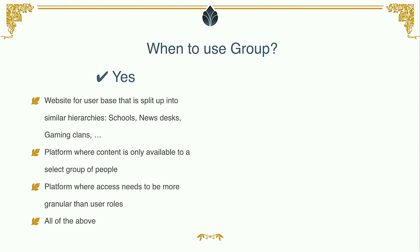You can also use group to create a platform where content is only available to a handful of people — think press area. When you want press releases accessible only to certain journalists, you can create a group called 'press area,' put downloads in there, and they'll only be visible to journalists who are members of that group. And when you need more granular access control — when regular site roles don't cut it and you want a finer difference between people with the same site-level role — you can use groups as well. Or combine them all and go nuts.